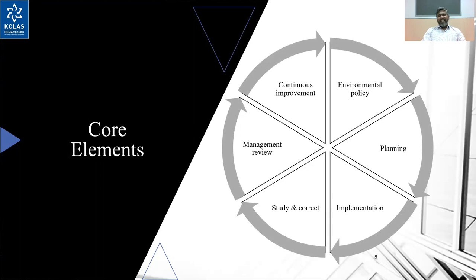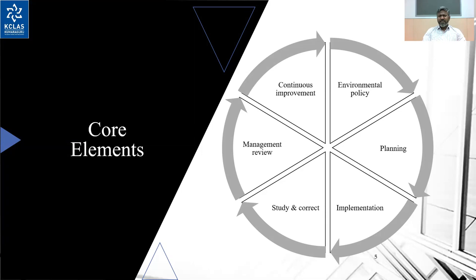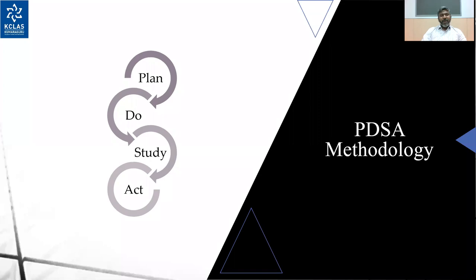The next one is study and correct. During implementation, anybody can go wrong — even experts. So they help you to study and correct where you've gone wrong, to identify the gaps and patch them up. The next one is management review, done by the management — not by the certifying body or implementers. Management was involved when the environmental policies were designed, and they see it from a different perspective. When you implement all these things, it becomes a continuous improvement — you keep improving on a yearly or monthly basis.